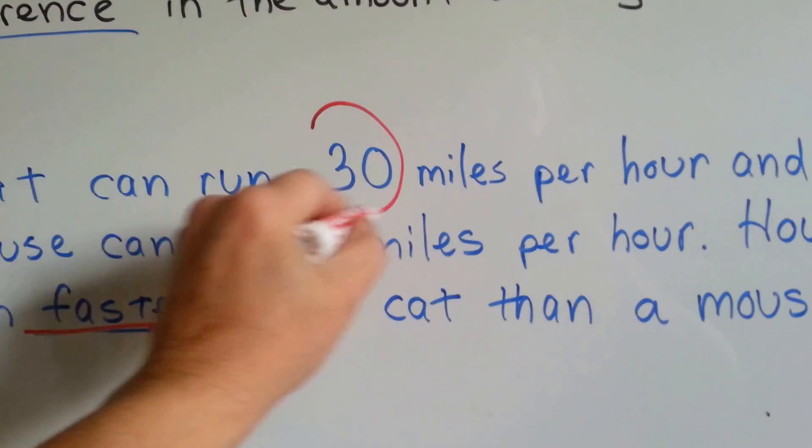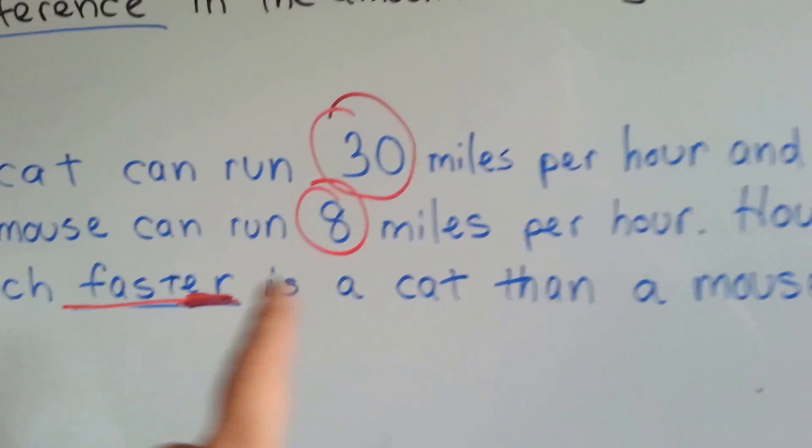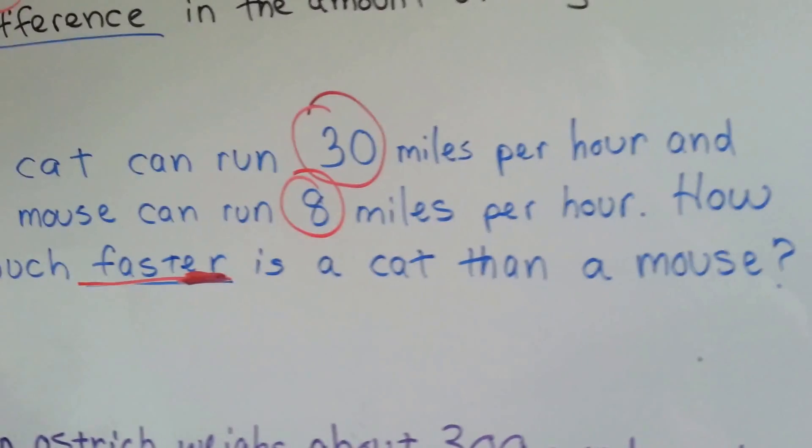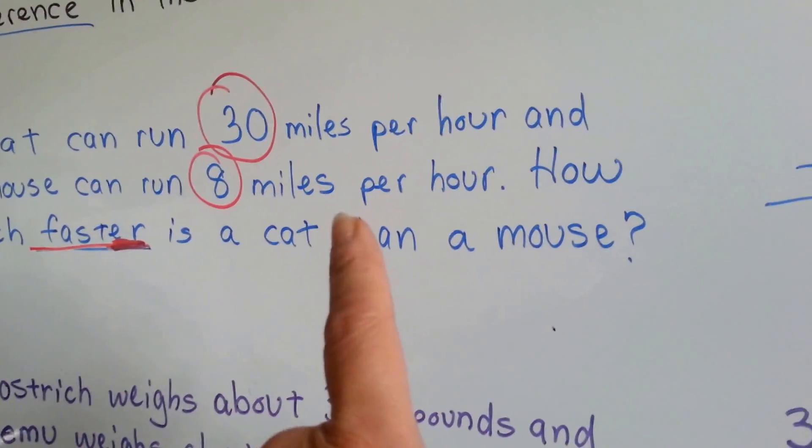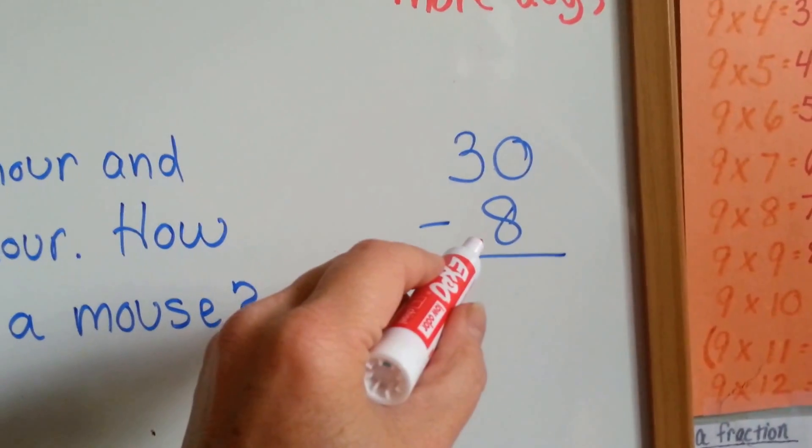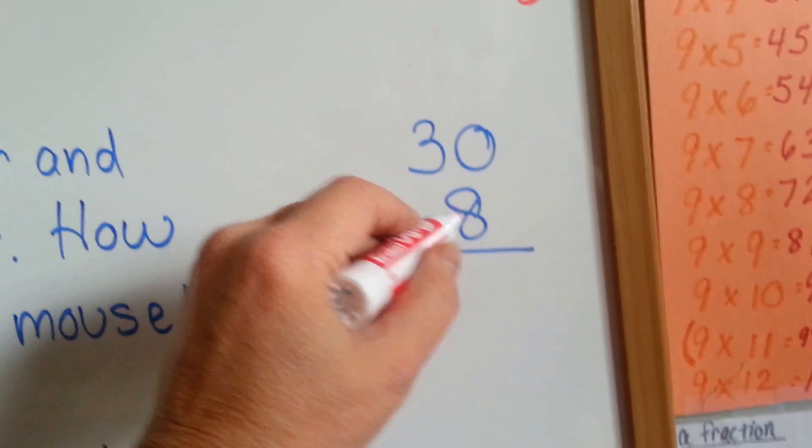It's one of the ER words. We're going to identify the numbers 30 and 8 and those are the numbers we're going to subtract. Don't forget we need to label it too. 30 take away 8.